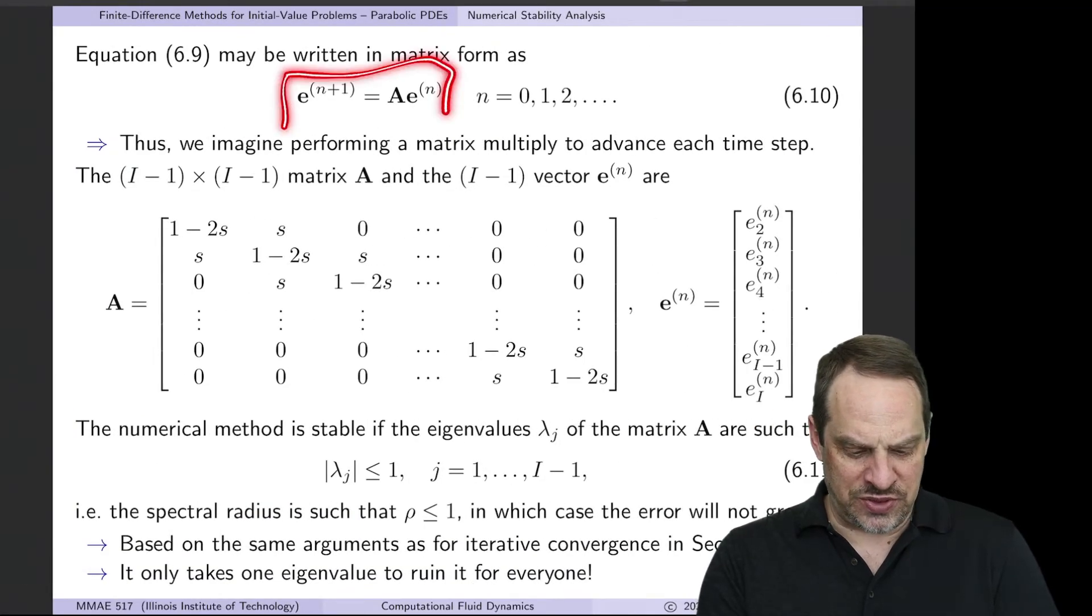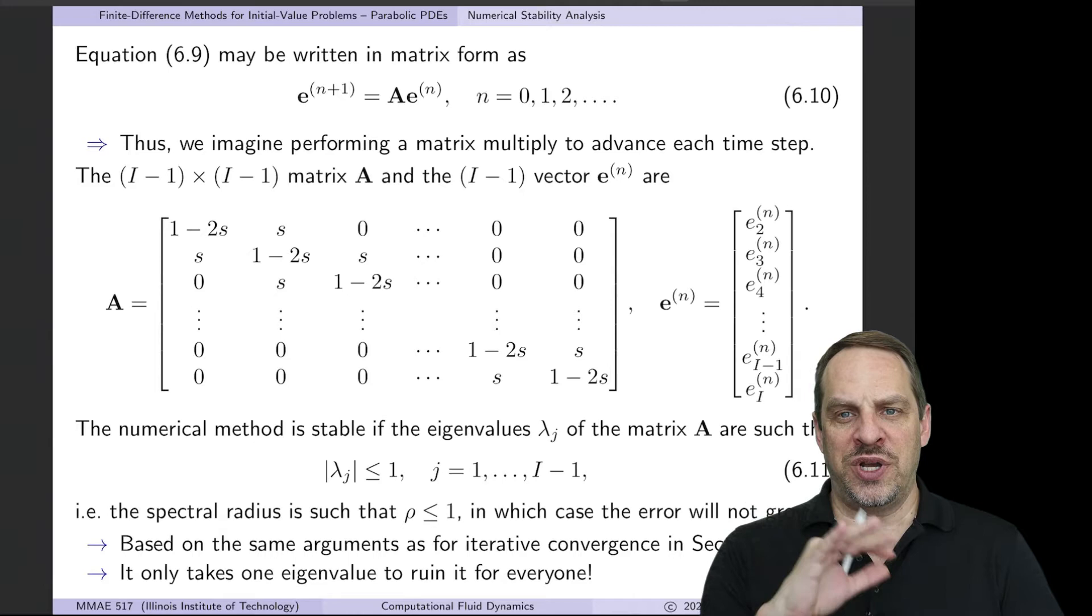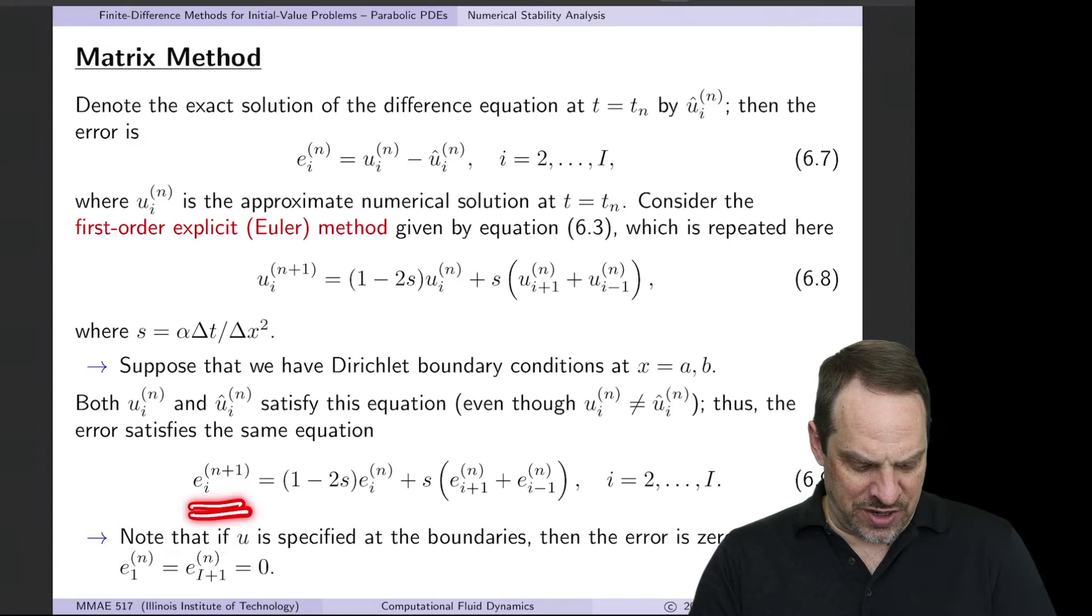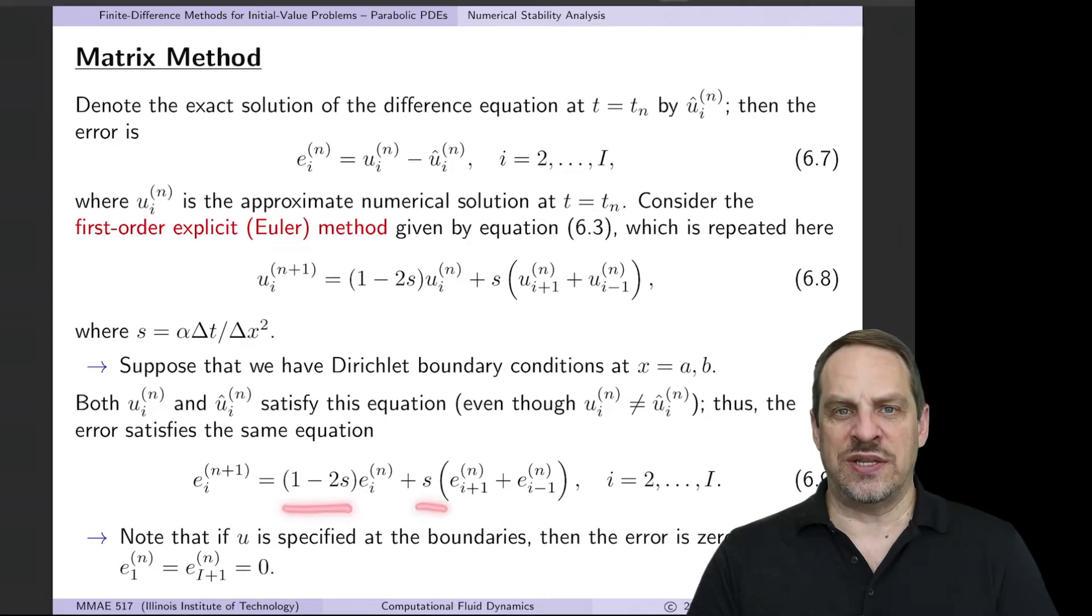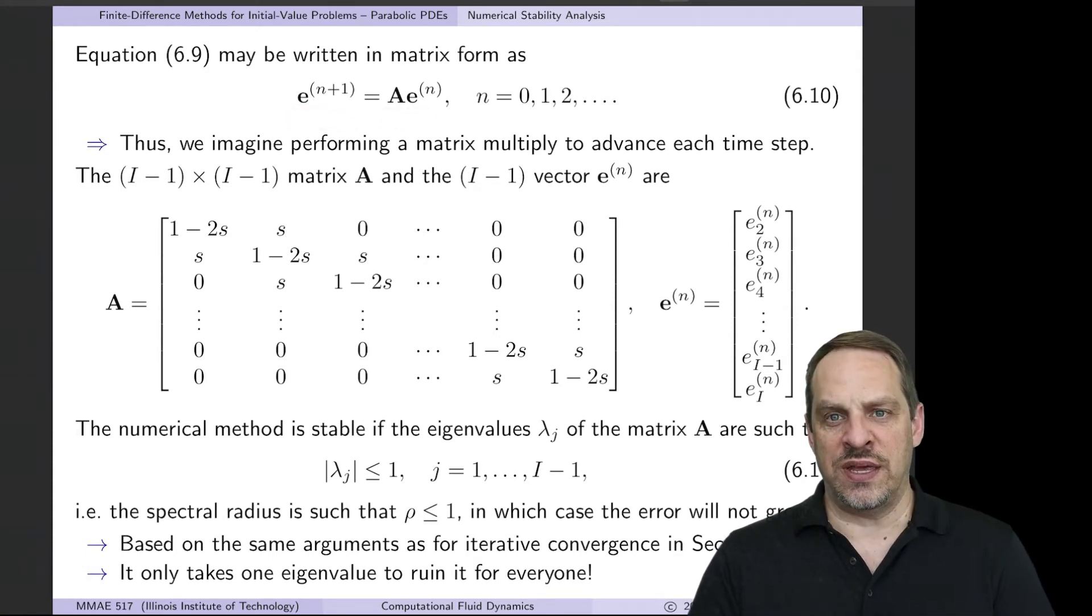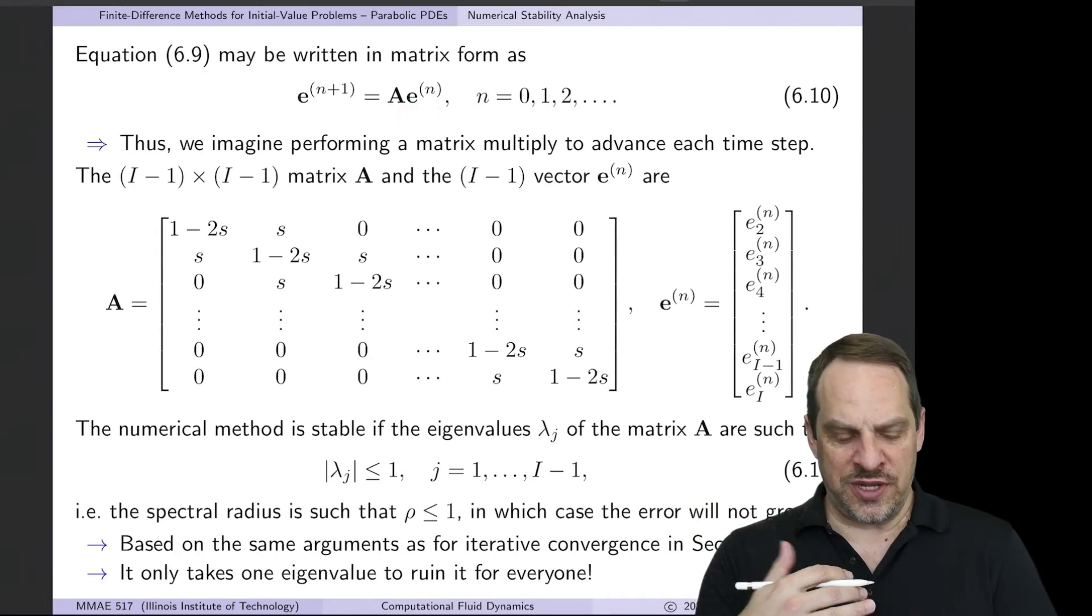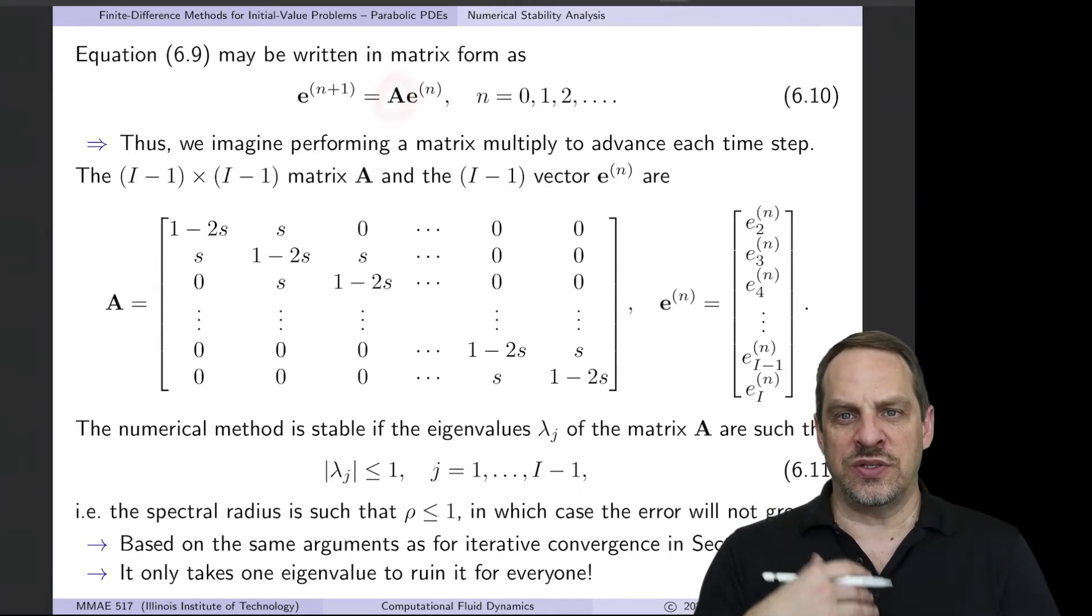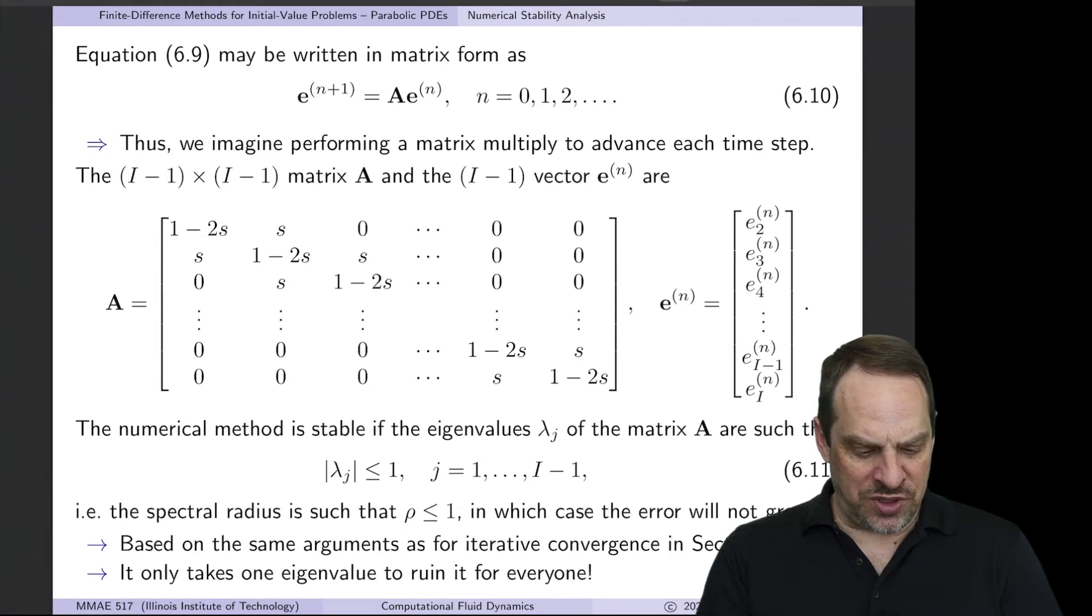Now we can write this in matrix form. This is not the way we actually solve it, but we can write it in this way in order to do the numerical stability analysis. So on the left hand side, we have the error vector. On the right hand side, we also have an error vector. And then we have a coefficient matrix that has the coefficients on those error terms. So it's going to look like this. We have e^{n+1} equals a matrix A times the vector e^n. The e^n's are known from the previous time step. We are looking for the errors at the next n plus first time step, and then the A is the coefficient matrix. So we can imagine going from one time step to the next by simply doing this premultiplication with this matrix A.